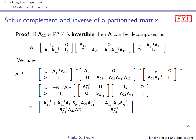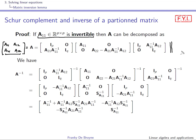To give an idea of the proof: recall that A has an inverse and is partitioned as A11, A12, A21, and A22. We want to find an expression for that inverse. Since A11 also has an inverse, you can factor A as a product of three matrices. You can verify this by computing the product of those three matrices — it is a good exercise in multiplying partitioned matrices.